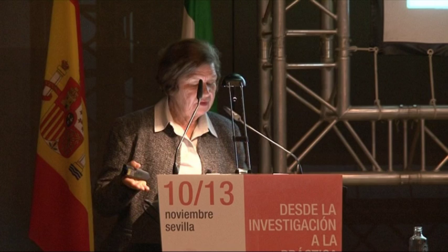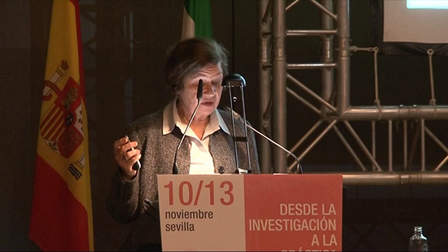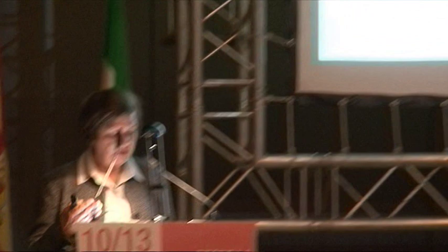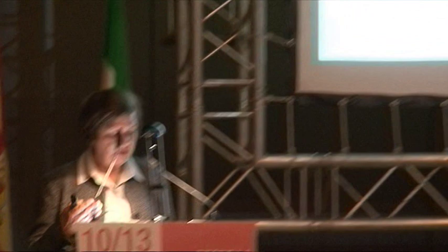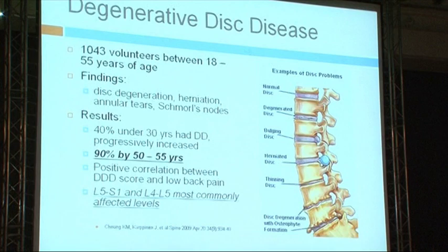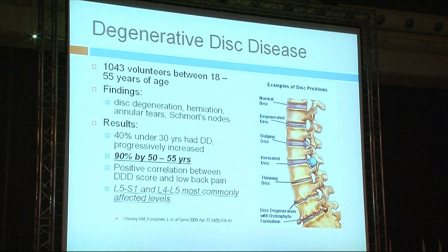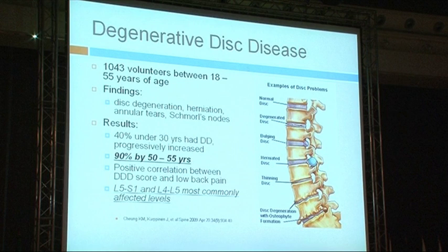The idea is to prevent a young-looking spine from becoming old and degenerated. In over a thousand people whose spines were examined between ages 18 and 55, there were significant findings: 40% of those under 30 had degenerative disc indications; 90% of people had spinal changes by age 50 to 55; and there is a high correlation between the amount of degeneration and low back pain, with the most affected segments being L5-S1 and L4-L5.